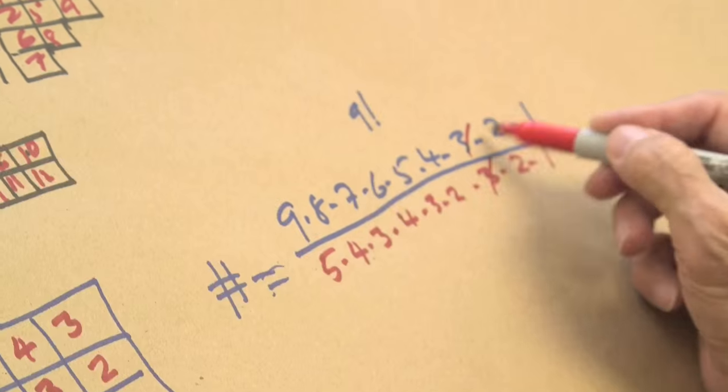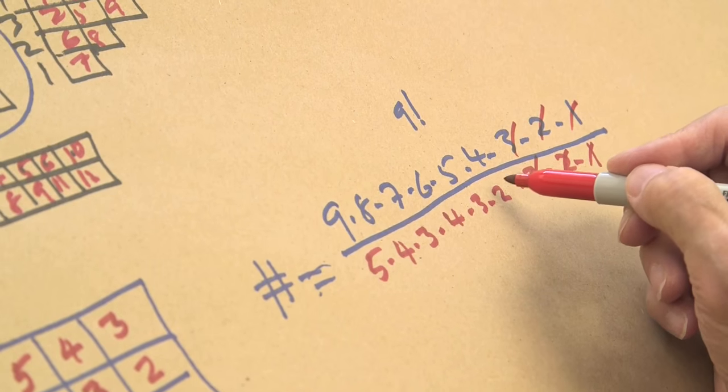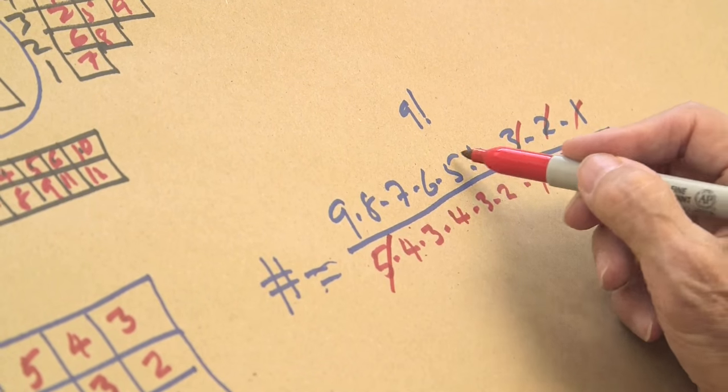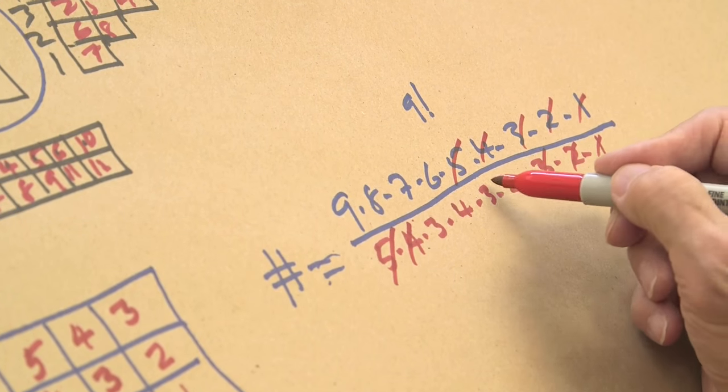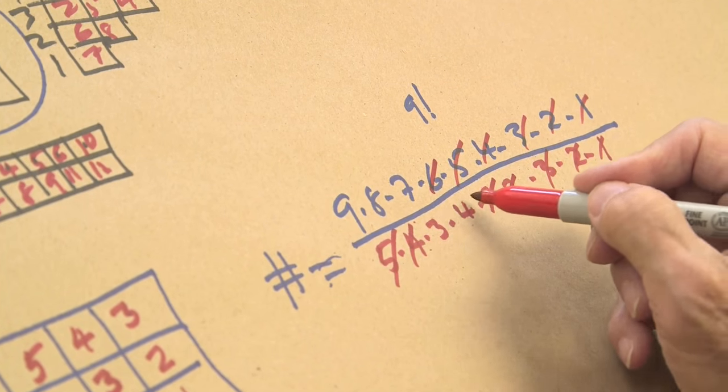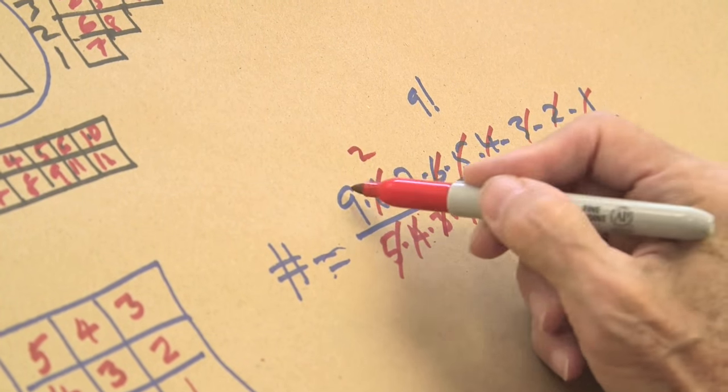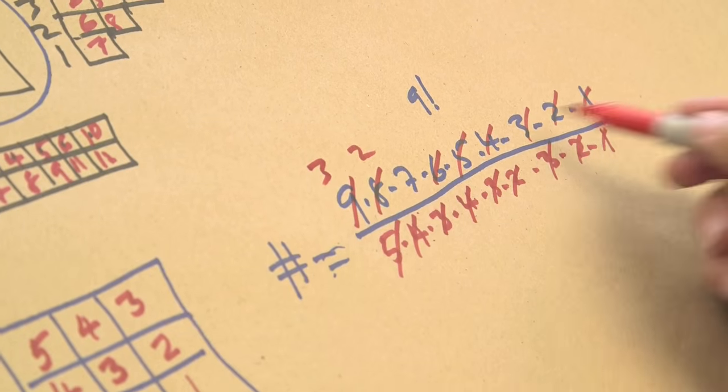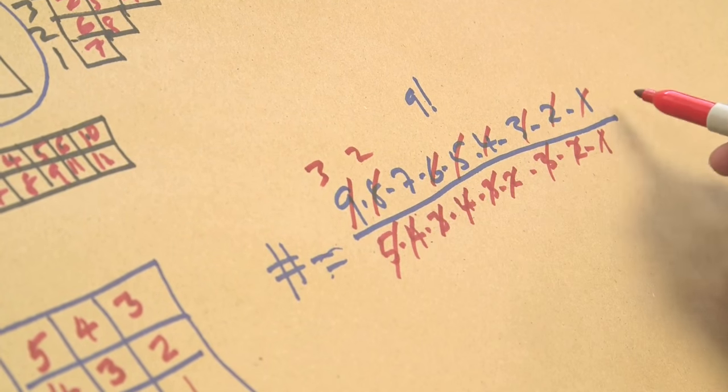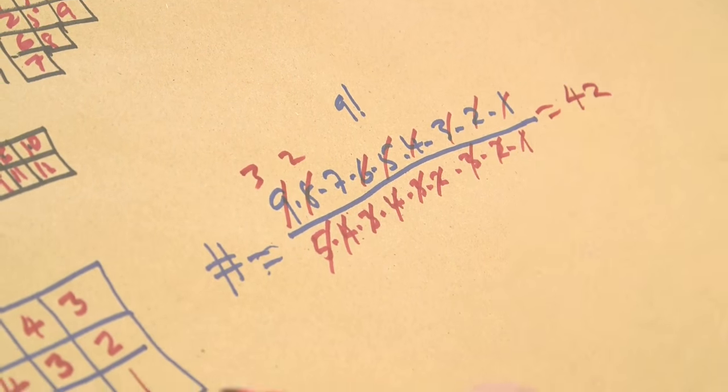Now let's just compute it. So this cancels, this cancels, these cancel, 5 cancels, 4 cancels, 3 times 2 is 6, 4 cancels leaving 2, 3 cancels leaving 3. I've canceled everything, and I say 3 times 2 times 7, which is 42. So that's how I got 42.